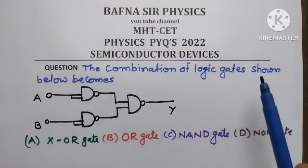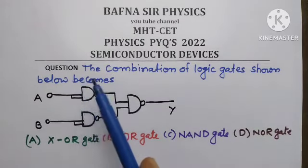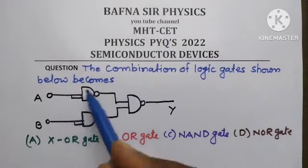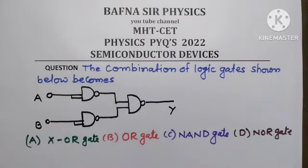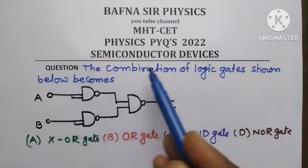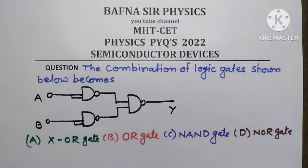The combination of logic gates given below becomes. You are given a combination of logic gates and you have to identify that this logic circuit will represent which of the logic gates.